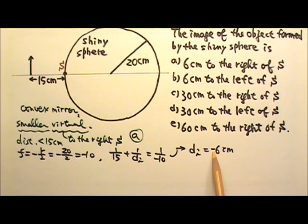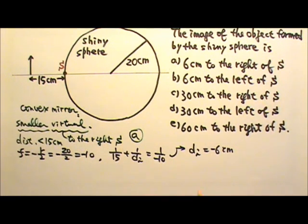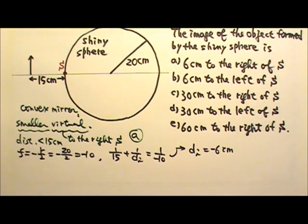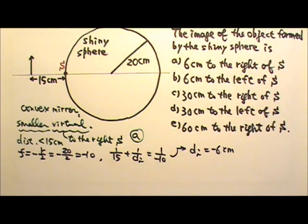The DI being negative tells us that it is a virtual image. So it is behind the mirror to the right of S, and it is 6 cm from the surface of the mirror. And it gives us the same answer but this calculation is completely unnecessary.